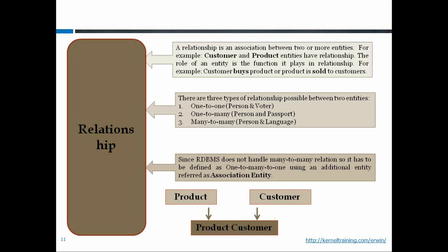For example, product and customer have a many-to-many relation — one product can be purchased by many customers and one customer can purchase many products. When a many-to-many relation exists, introduce a third table with the primary keys of both entities. Apart from those keys, the association entity may also hold attributes that depend on both parents, such as rate — if the same product is purchased by different customers at different rates, that rate depends on both customer and product, so it belongs in the association entity.